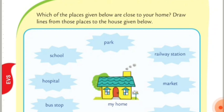Which of the places given below are close to your home? Draw lines from those places to the house given below. So this is your house. Here are some places: the park, railway station, market, fire station, police station, bus stop, hospital and school. You have to draw lines to the places close to your home.